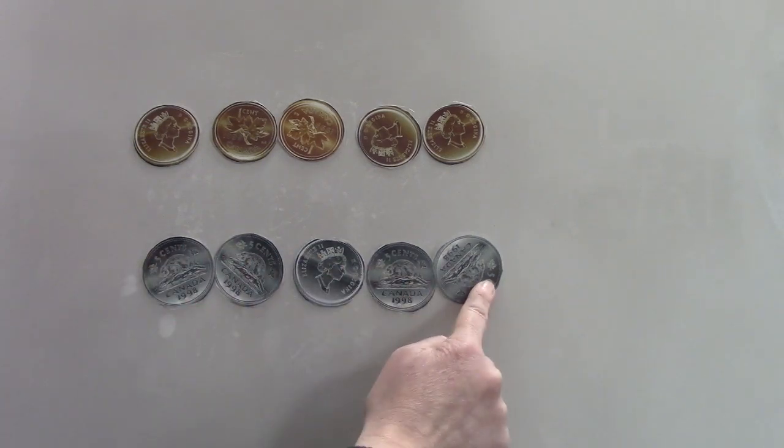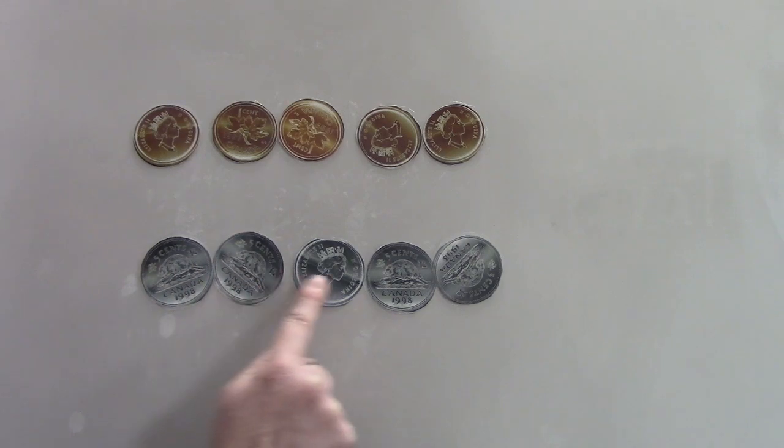It's worth five cents. So when we count them, we're going to count by five. Five, 10, 15, 20, 25. So we have 25 cents in nickels.